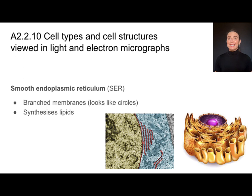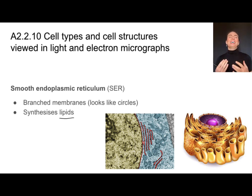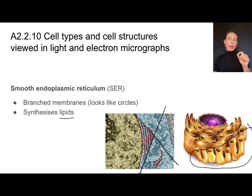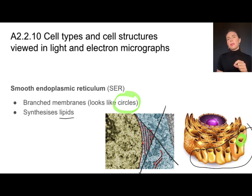The smooth ER can be a little bit more difficult to find. I like to remember that it's smooth — lipids are like fats and oils, and I think of them as slippery and also smooth. It's called the smooth ER because it doesn't have any of those ribosomes, so none of those bumps. I don't see any in this micrograph actually, but I do see it in this picture. When looking for it in a micrograph, I want to look for these holes or circles. If I'm seeing those near the rough ER, I should be thinking of the smooth endoplasmic reticulum.